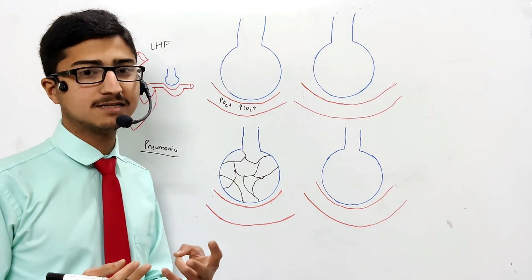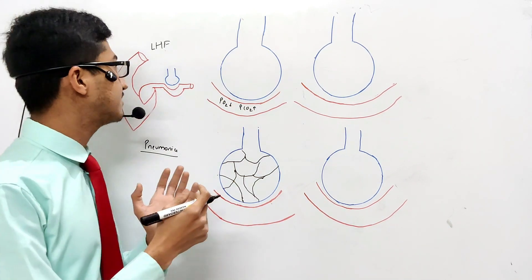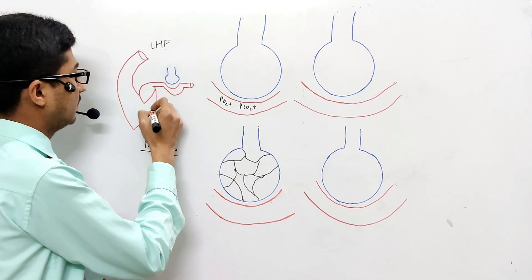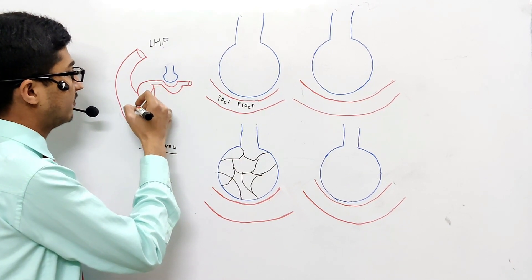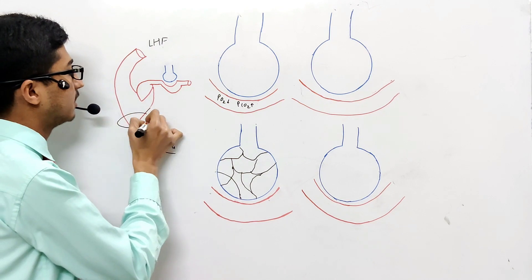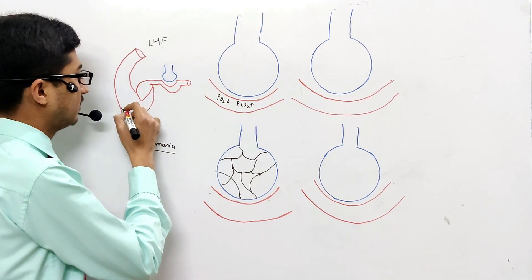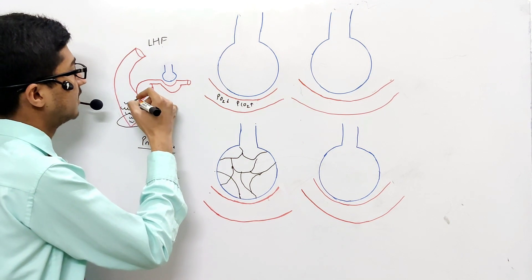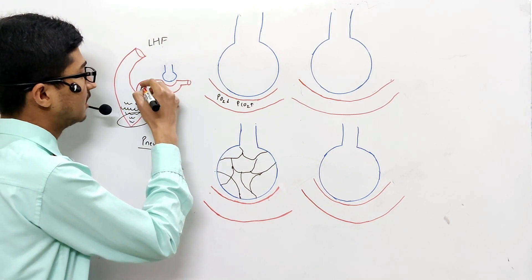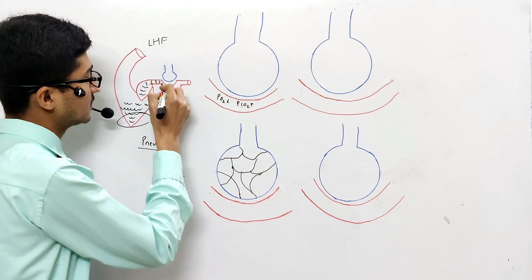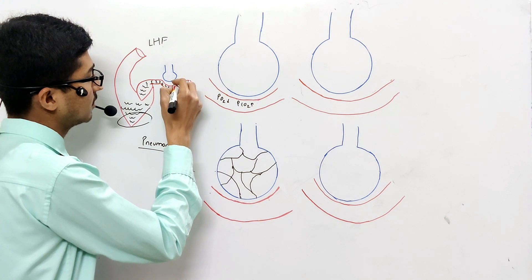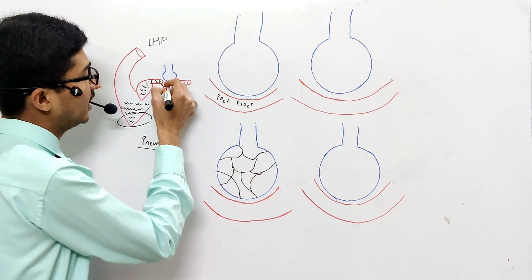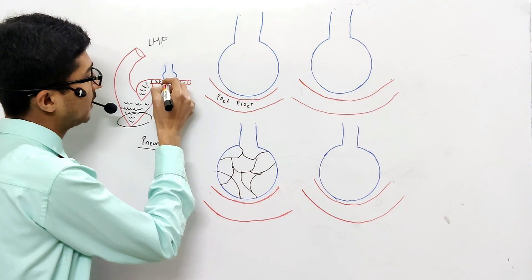There are two sets of diseases where this condition occurs. The first one is left-sided heart failure. What happens is that blood inside the left atrium moves to the left ventricle, but the left ventricle is unable to pump. Blood inside the left ventricle starts accumulating, creating a back pressure, and blood also backs up into the left atrium, which creates back pressure on the capillaries.